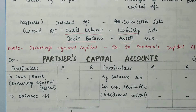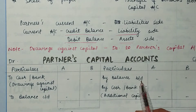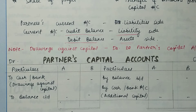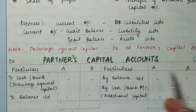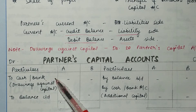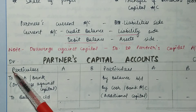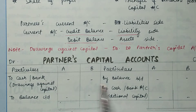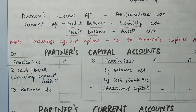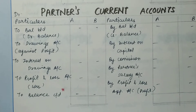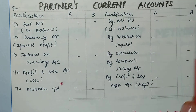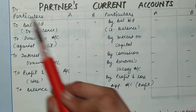In the fixed capital account, only additions and withdrawals are recorded. The opening balance is on the credit side. If there are drawings against capital, they go on the debit side. Additional capital in cash or bank goes on the credit side. Then we calculate the balancing figure. In the current account, you include all other transactions, and the balancing figure can be on either the debit or credit side depending on the situation.